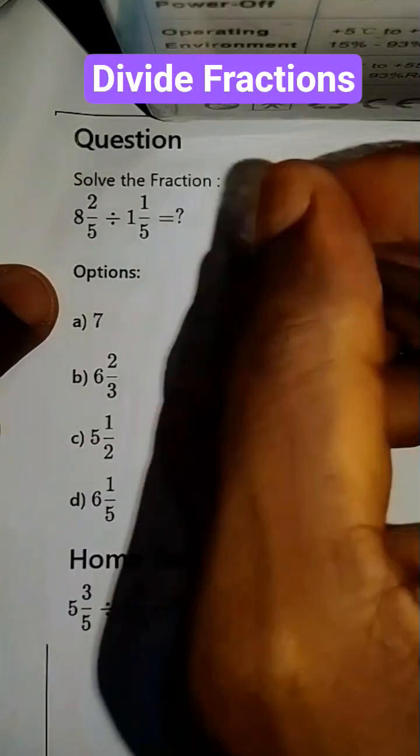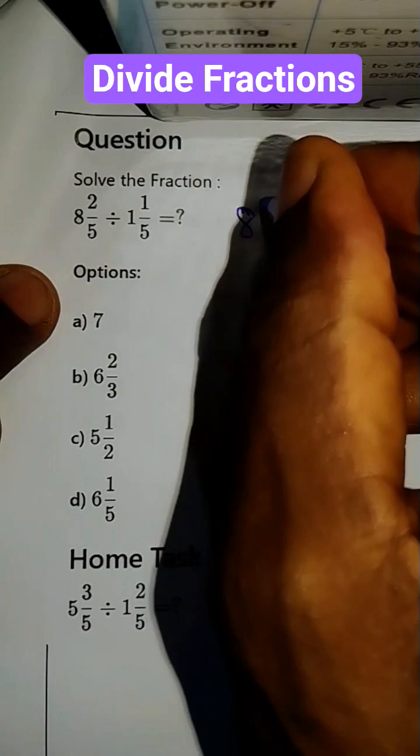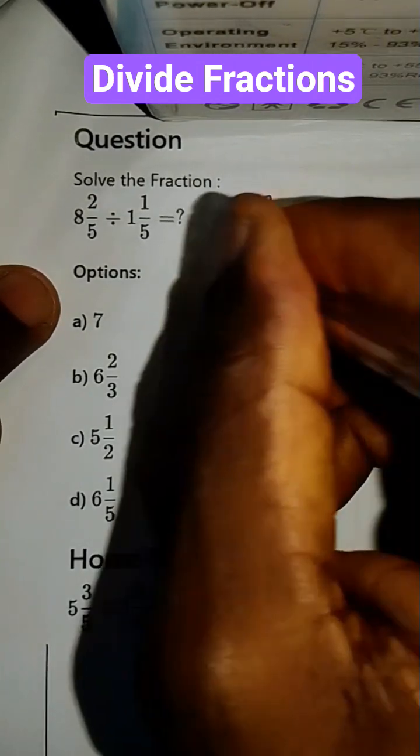Let's solve this division. This is like writing 8 and 2 all over 5.